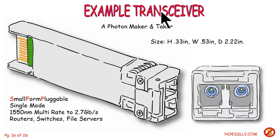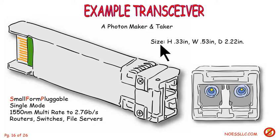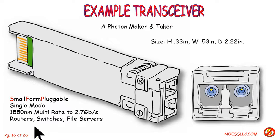The transceiver right here is known as a small form pluggable (SFP). It's a little tiny thing that just plugs into a slot in something like a router, a switch, or a file server. Basically, it's a light bulb and a photo detector.